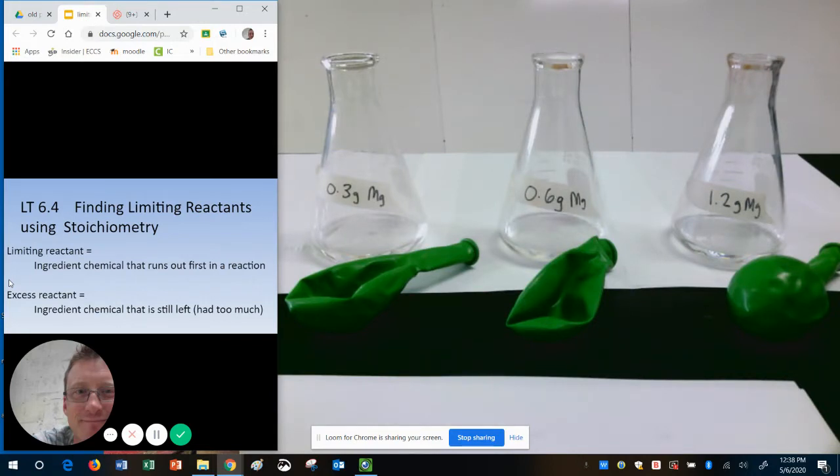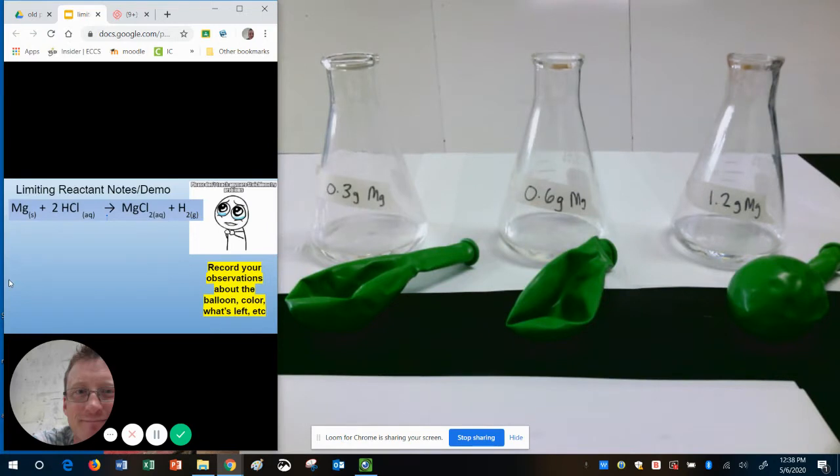So today the reaction that we're going to do is the reaction of magnesium metal with hydrochloric acid, that's HCl. And when it reacts it produces a salt, magnesium chloride, which stays dissolved in liquid, and it produces hydrogen gas.